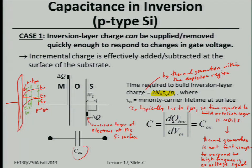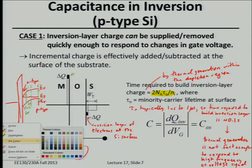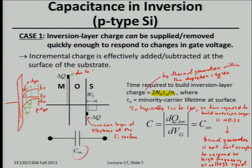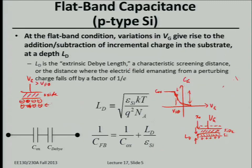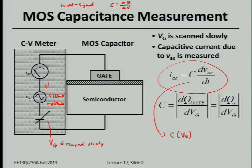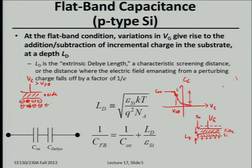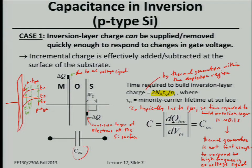Case one — where the inversion charge can respond to the small signal — is not the realistic case for a simple p-type silicon substrate. If you're adding positive charge to the gate with the AC signal, you need equal and opposite charge in the semiconductor. Without a ready minority carrier source, the only way is to widen the depletion region by moving holes, which are majority carriers and can move quickly in and out through the metal contact.